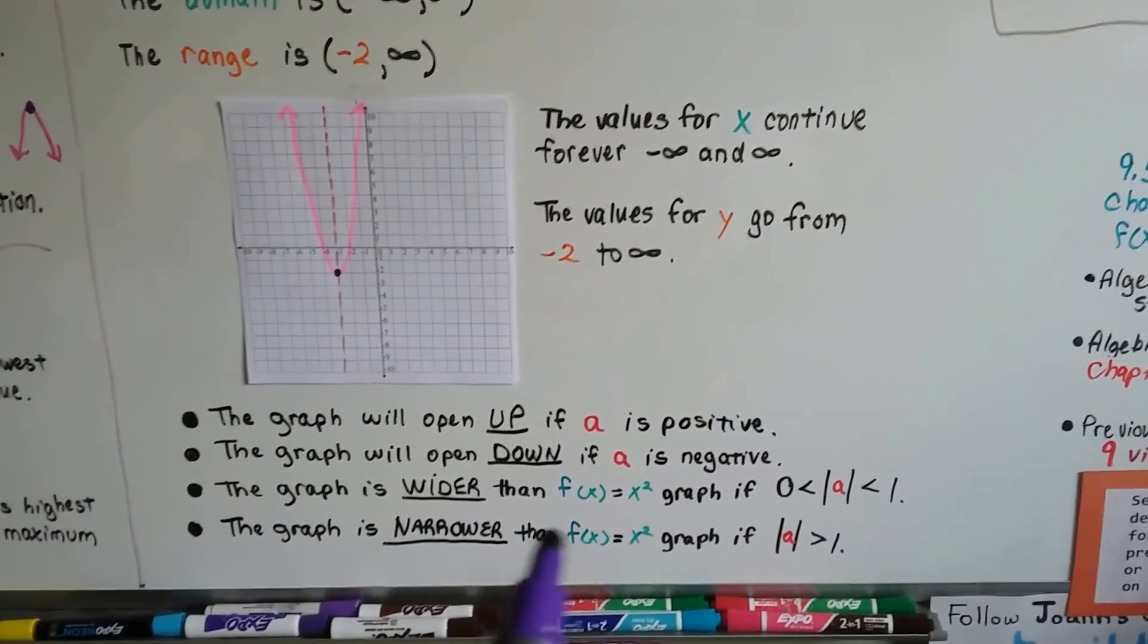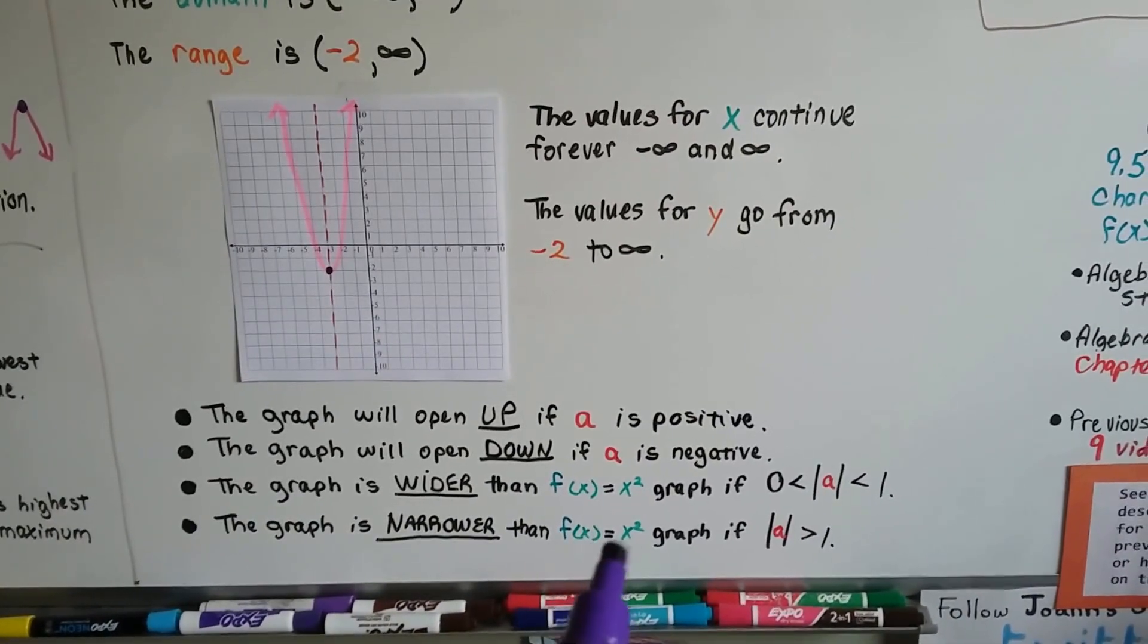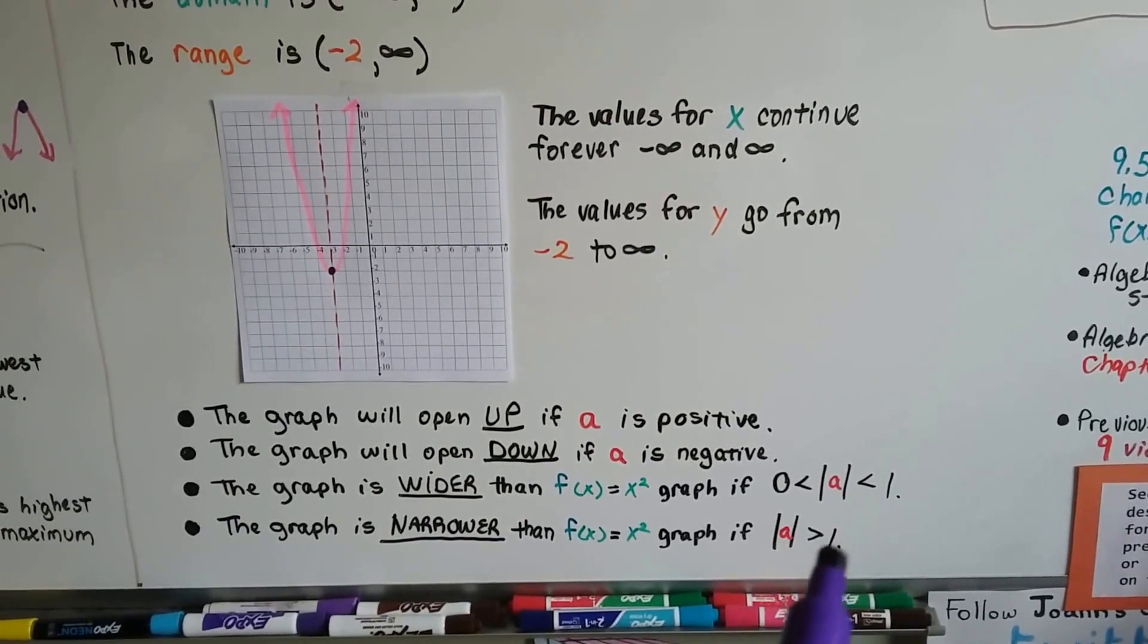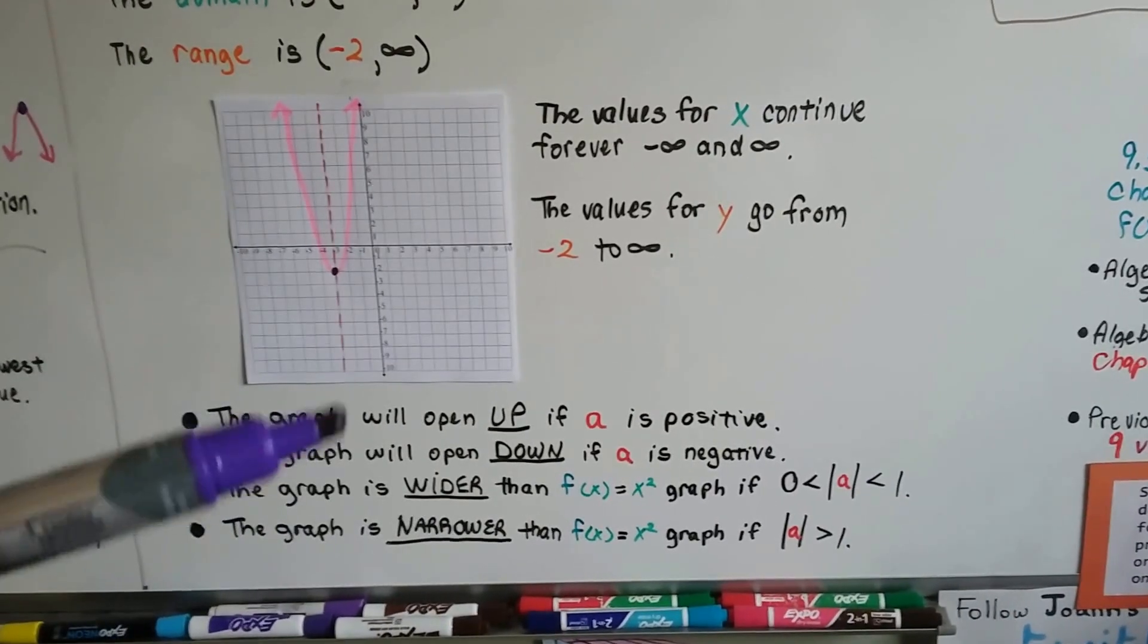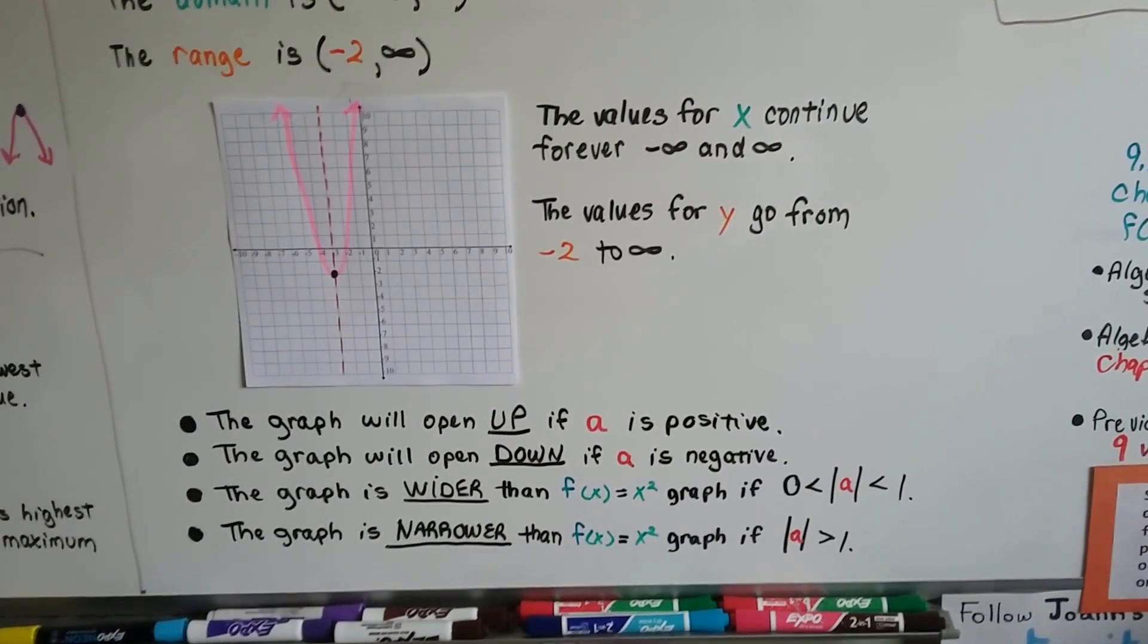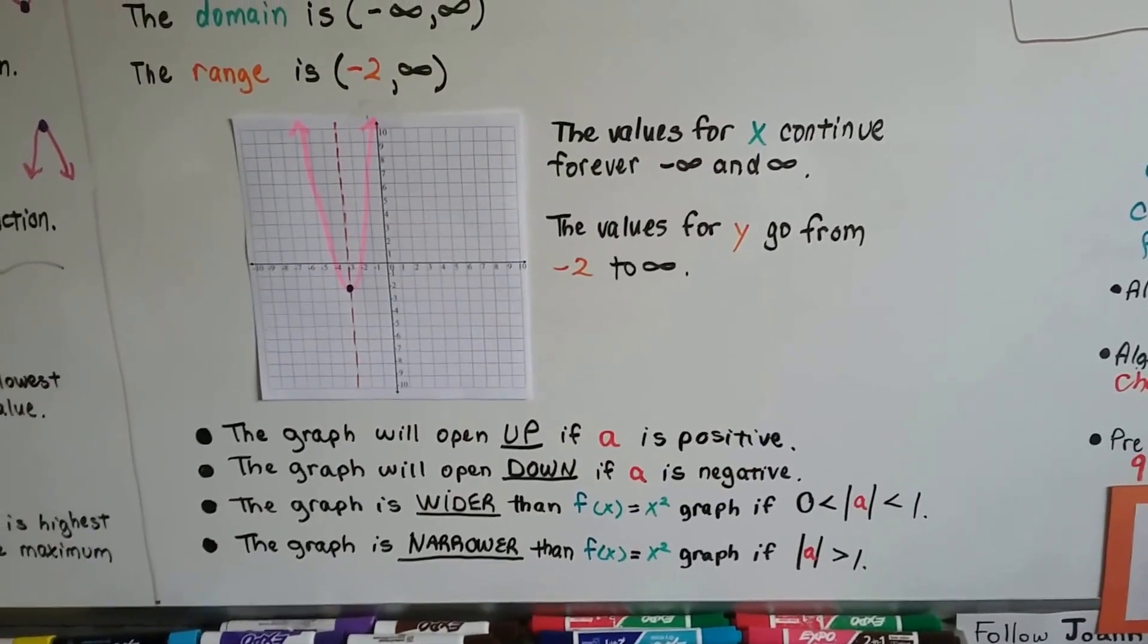And it's going to be narrower than that function f(x) = x² if the absolute value is greater than one. You might want to write these down. Maybe you can pause the video and write those down.